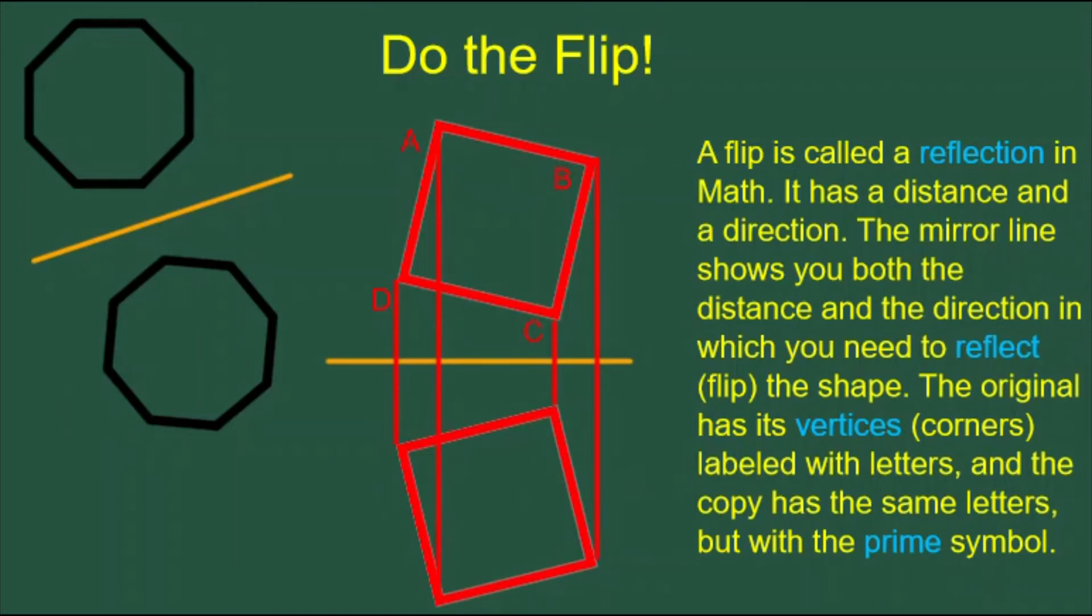To show what is the original and what is the copy, I will also label the vertices of the copy. But I use the same letters with prime symbols. A, B, C, D is the original square, and A prime, B prime, C prime, D prime is the copy of the square. It's reflection across the mirror line.